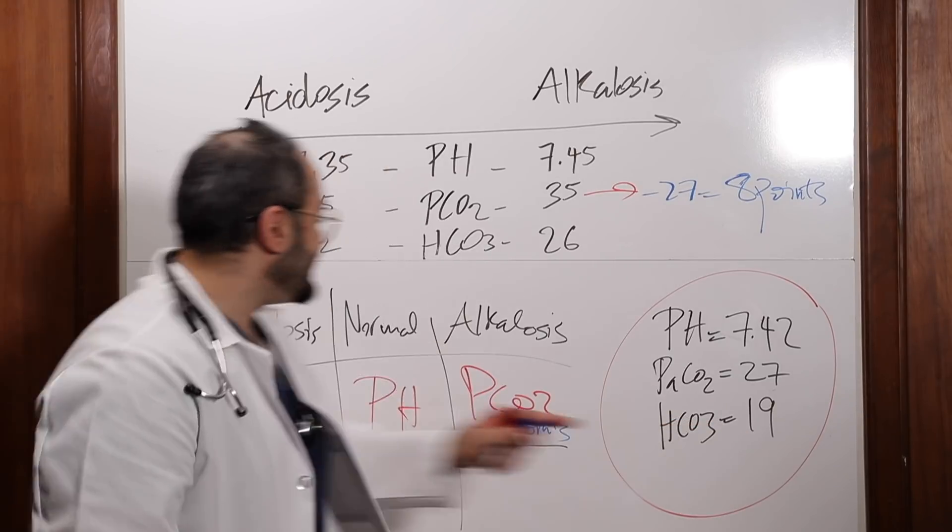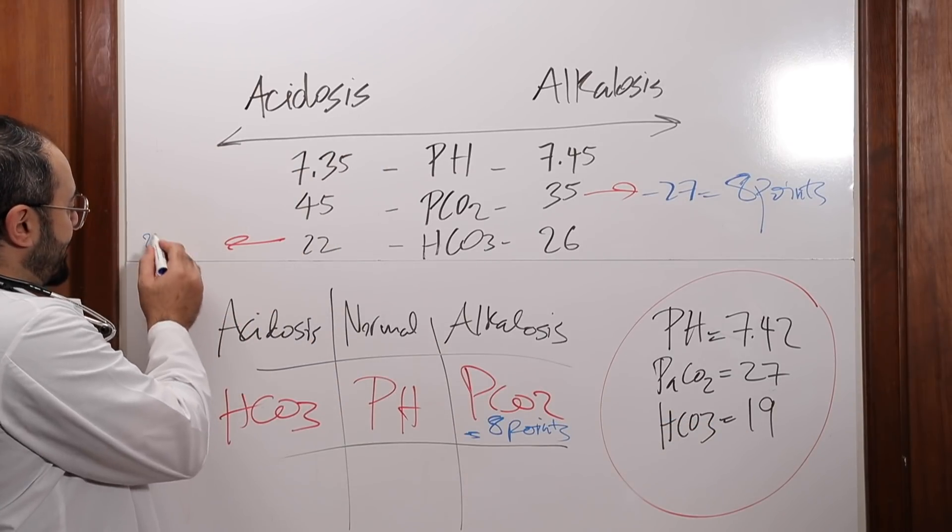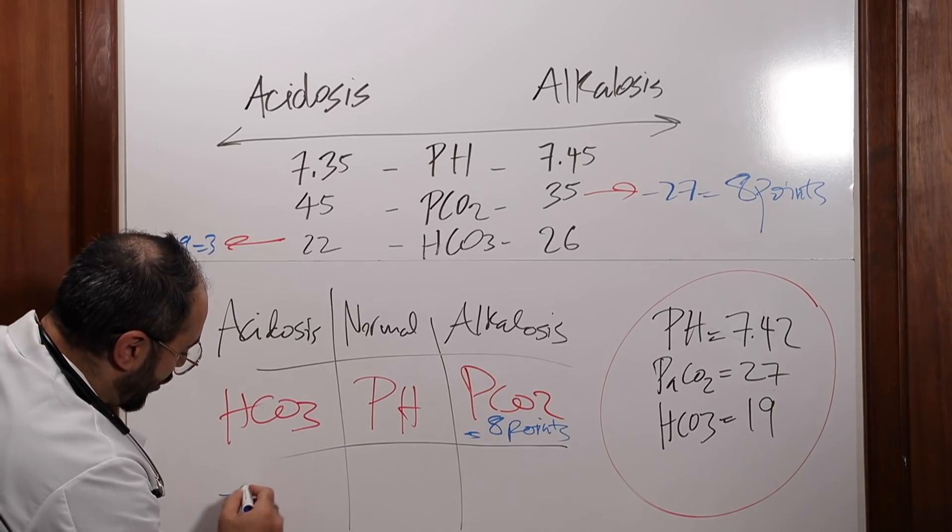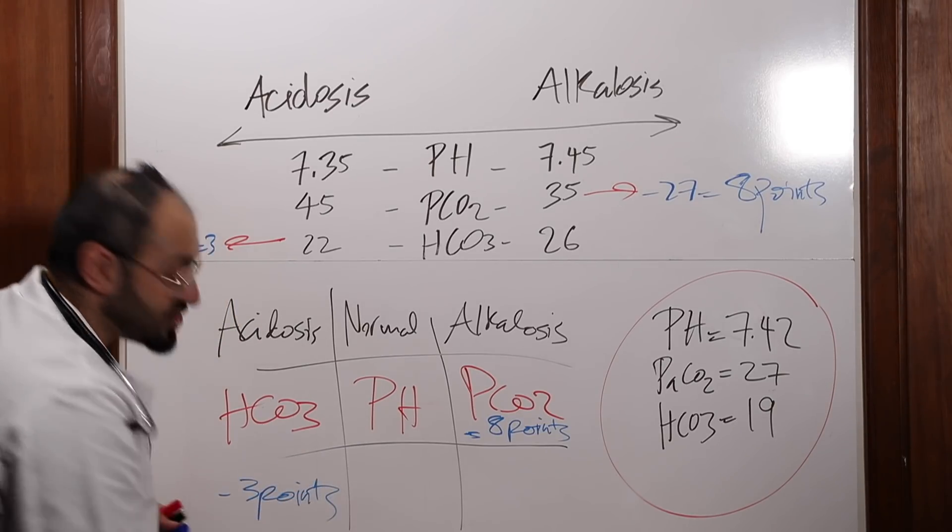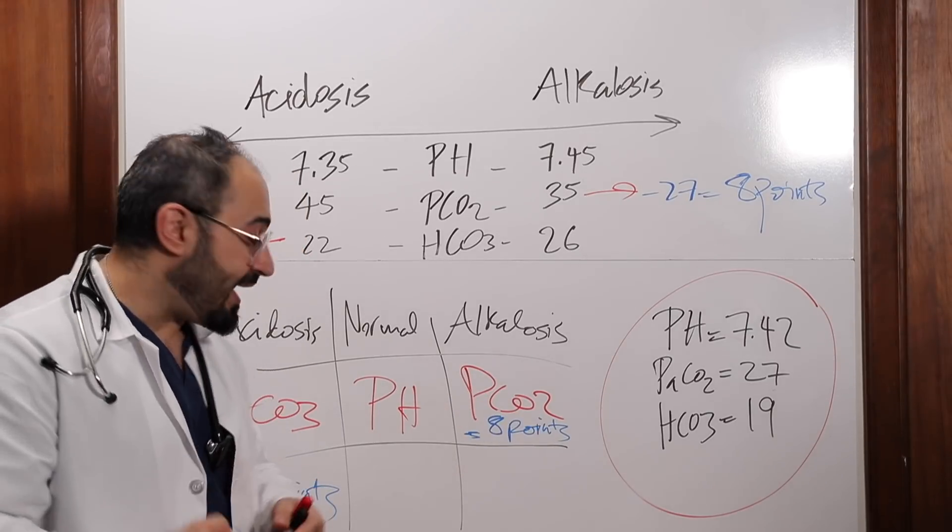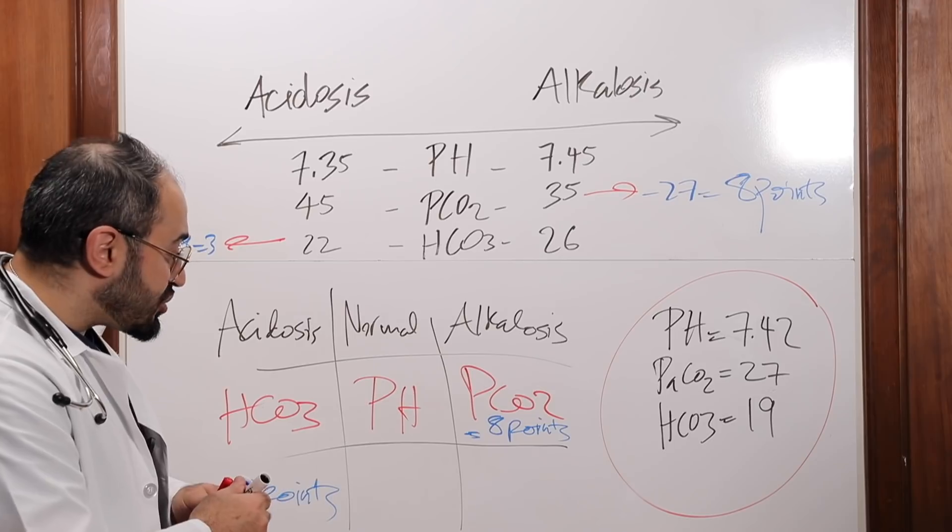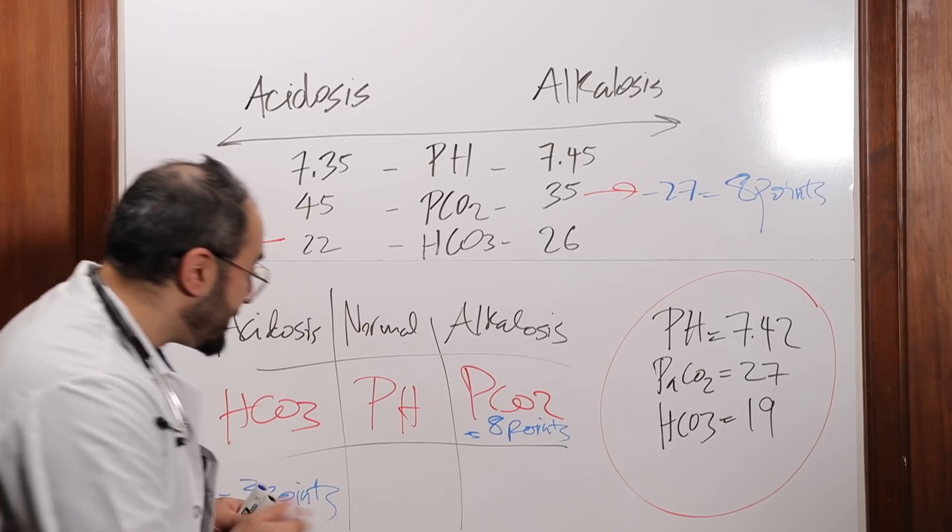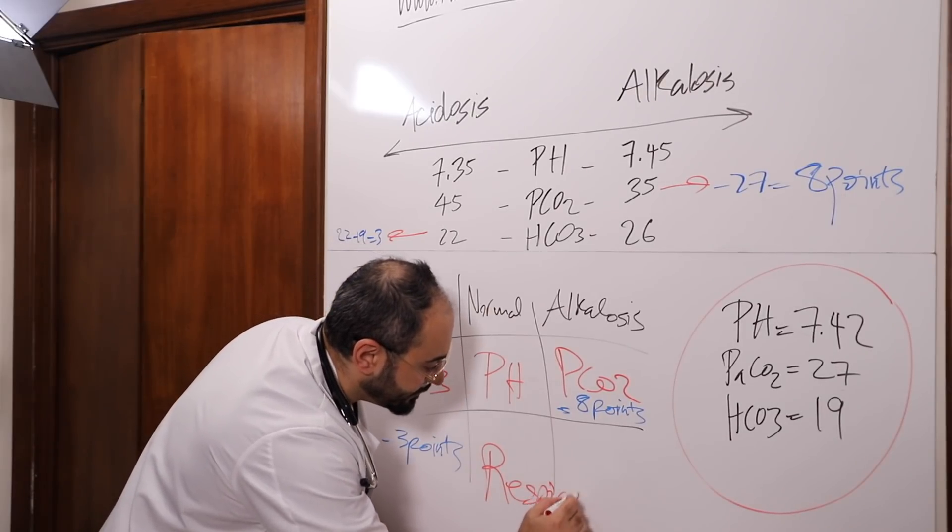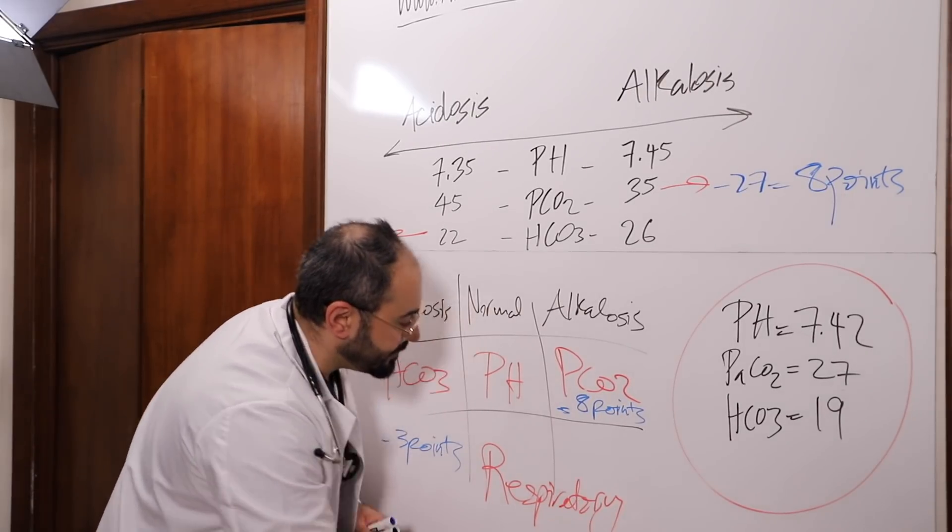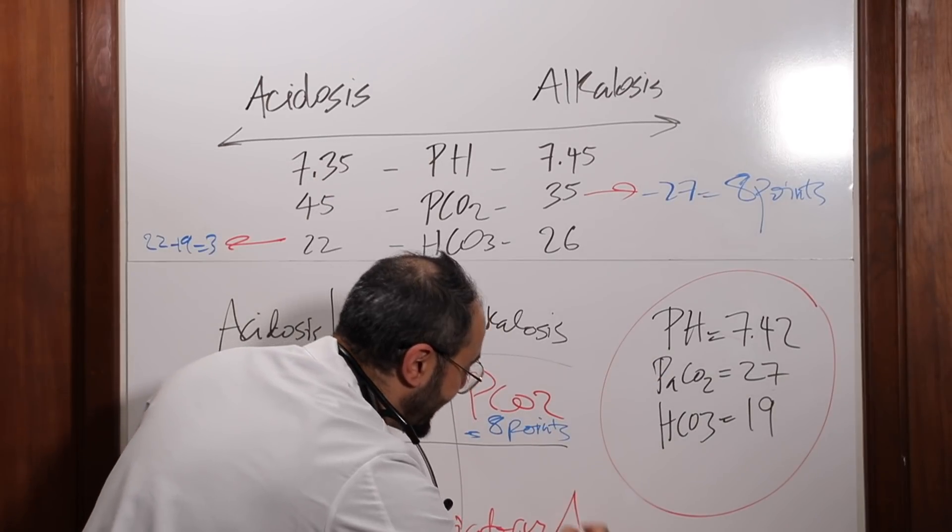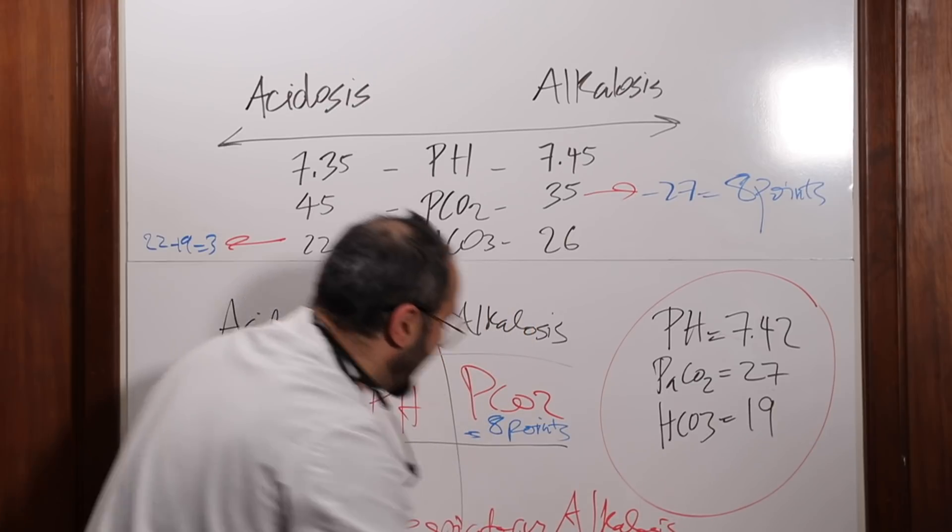What about the bicarb? It's 19. So if I wanna put 22 minus 19, that's 3. So it's 3 points. So where is my problem? So my main problem is the lungs. So how do I interpret this ABGs? I interpret it as respiratory because that's my main problem. And because it is on the alkalosis side, I'm gonna say respiratory alkalosis.